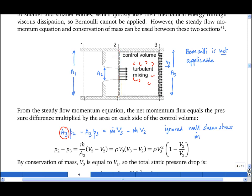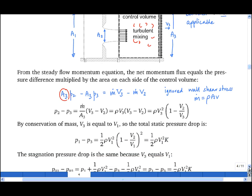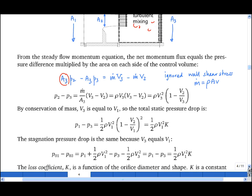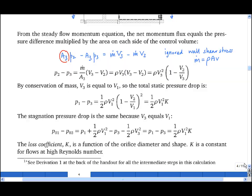And rearranging and using the fact that M dot is equal to rho A V at any station, we obtain an expression for P2 minus P3. Now, by conservation of mass, V3 is equal to V1, so we obtain an expression for the total static pressure drop, and then we get the stagnation pressure drop because V3 is equal to V1. And this stagnation pressure drop is the total pressure drop because the orifice is horizontal. There's no change in h.